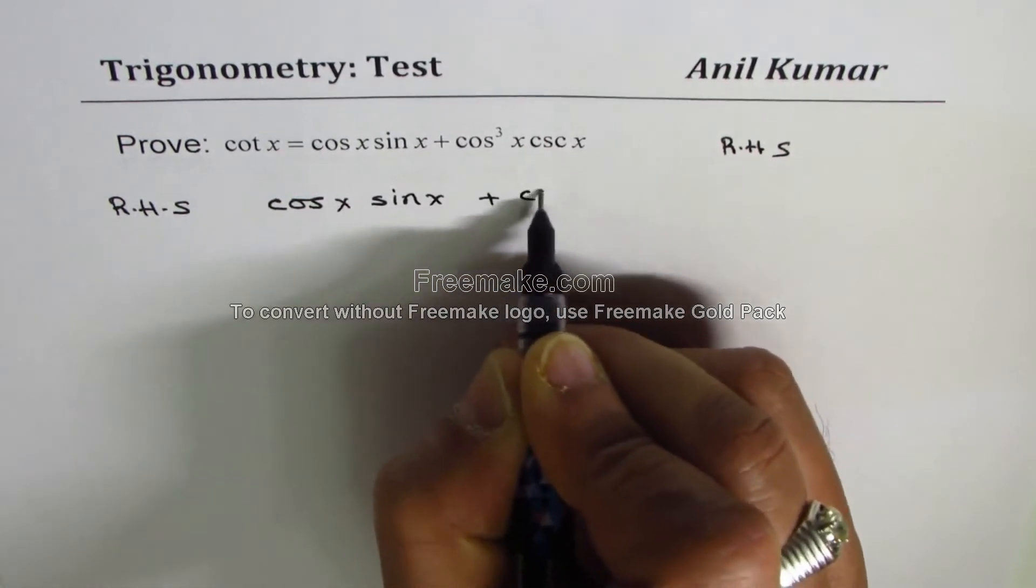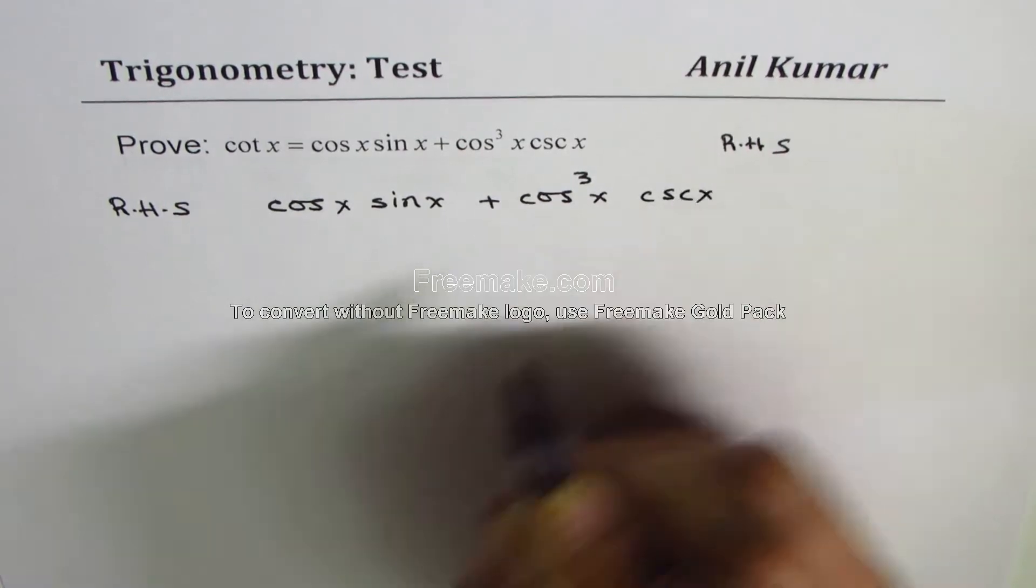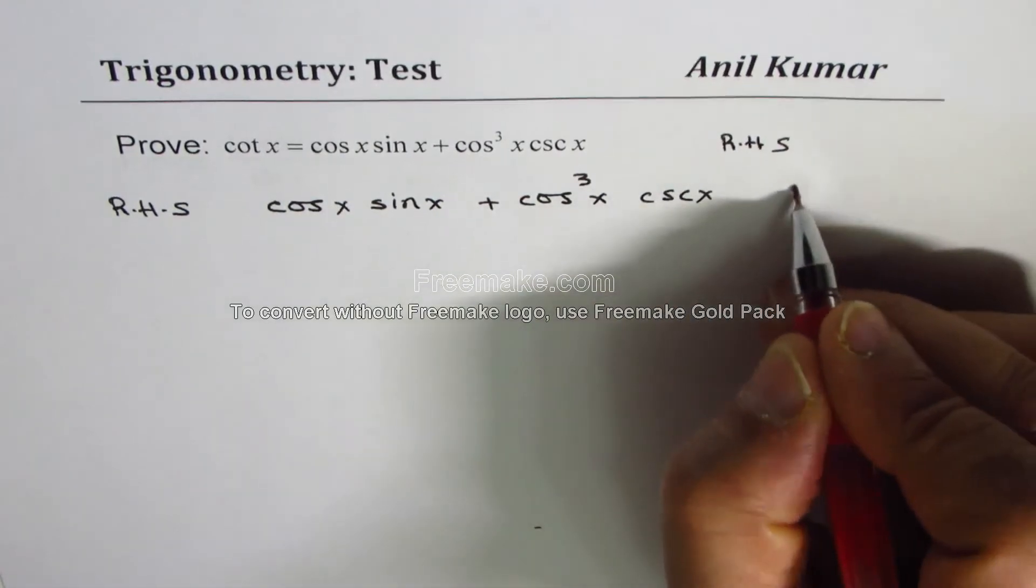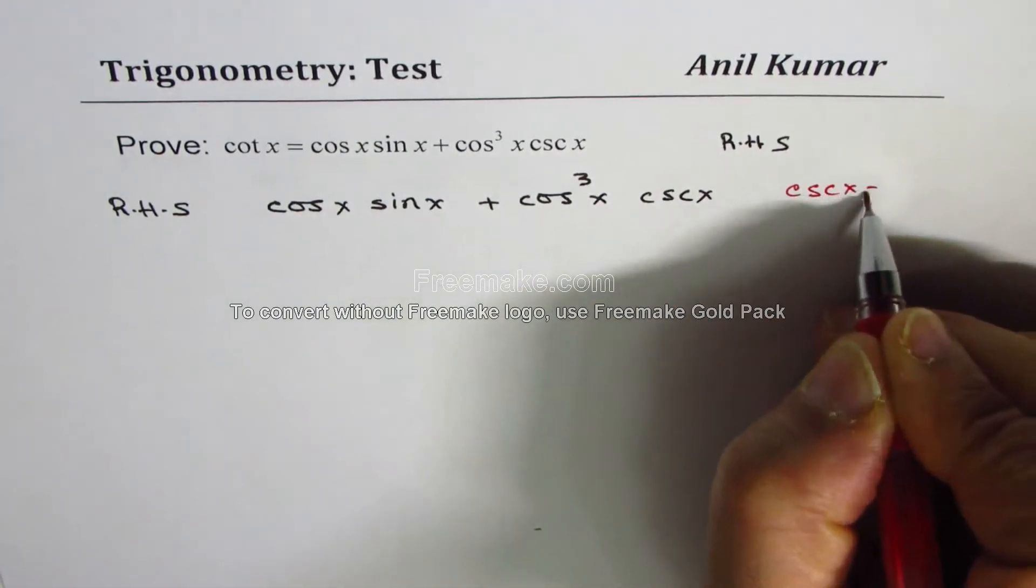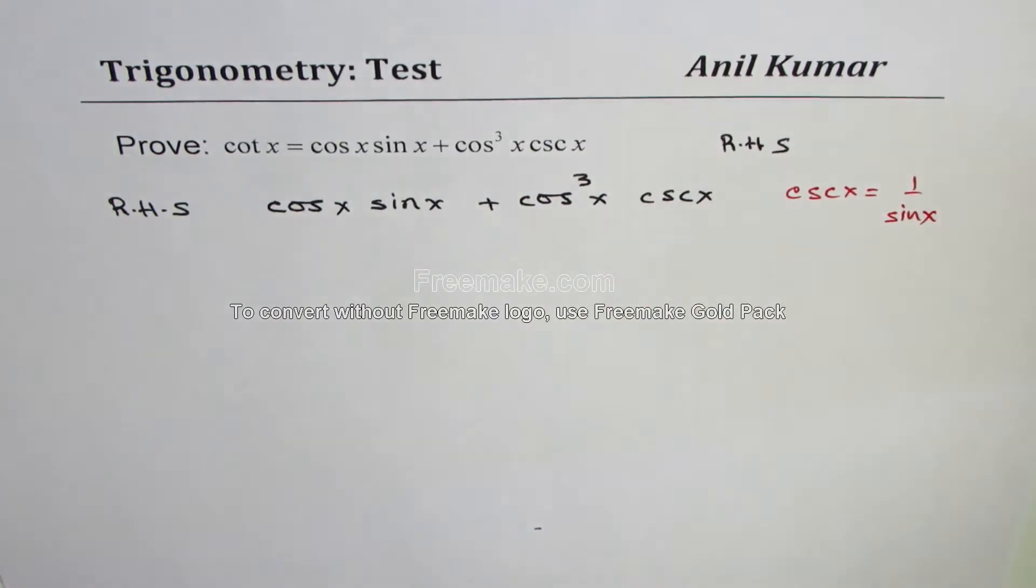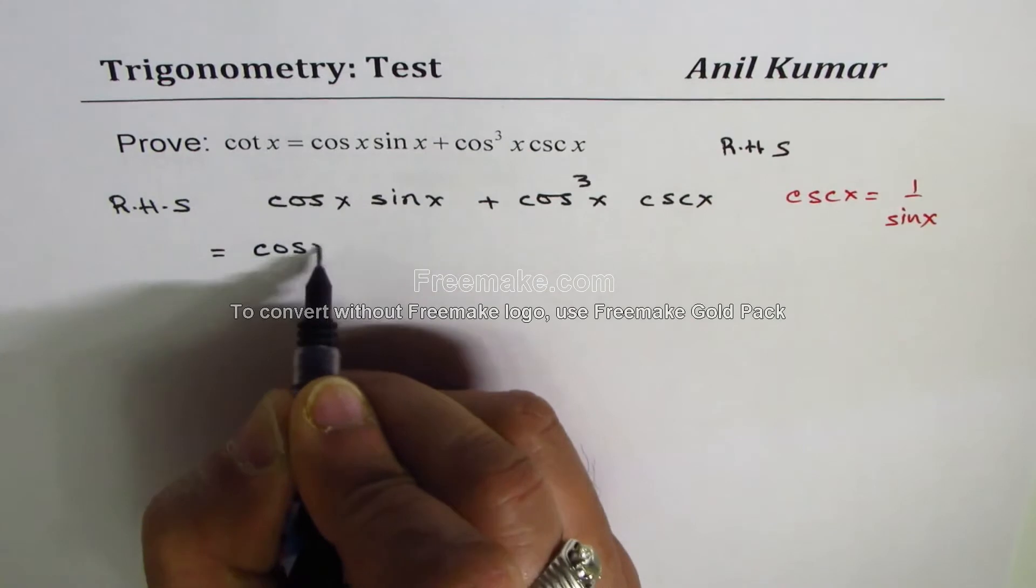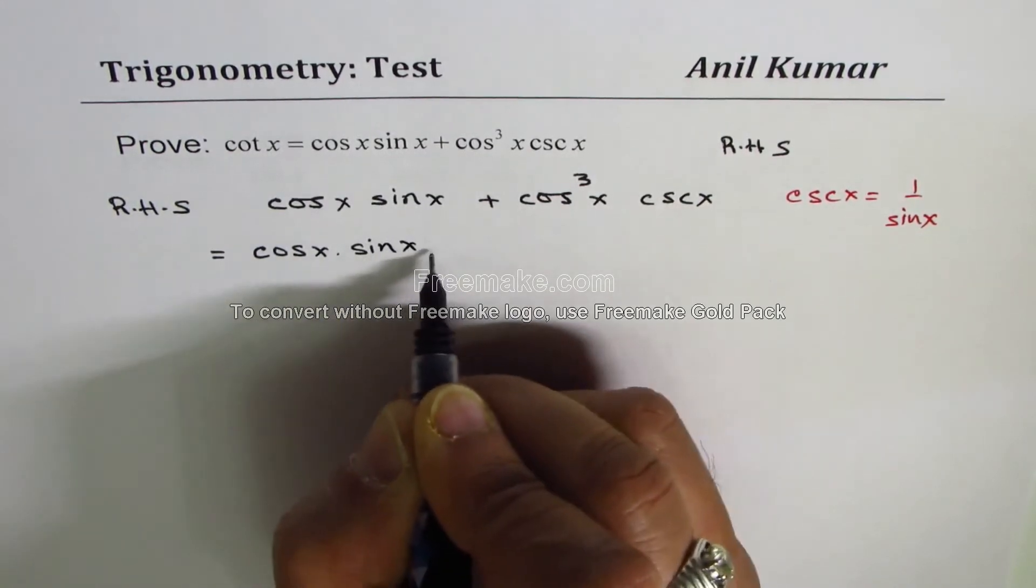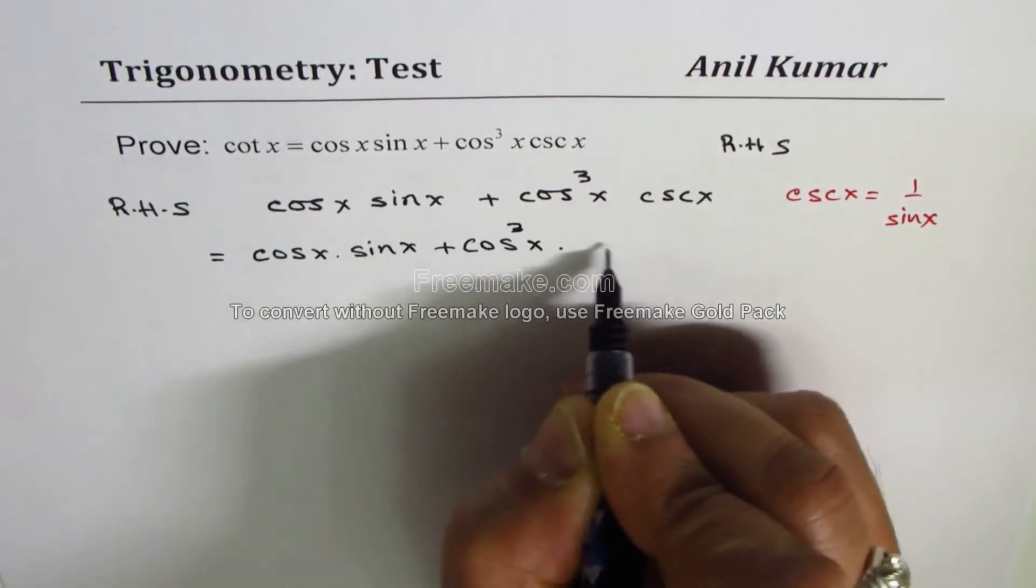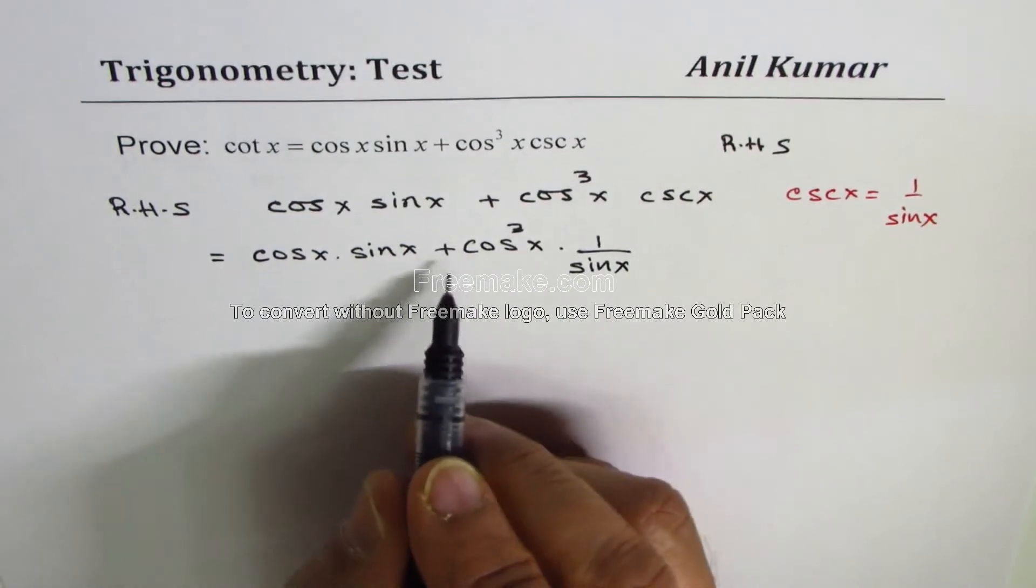The next step should always be to write everything in sine and cosine. We know csc x equals 1 over sin x, so we can write this as cos x sin x plus cos³ x times 1 over sin x.